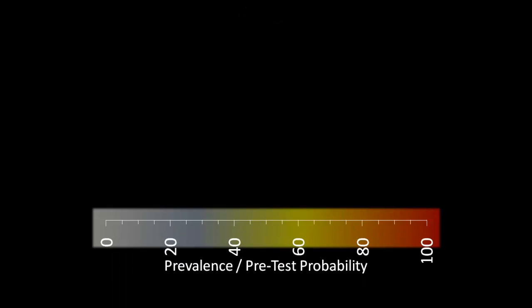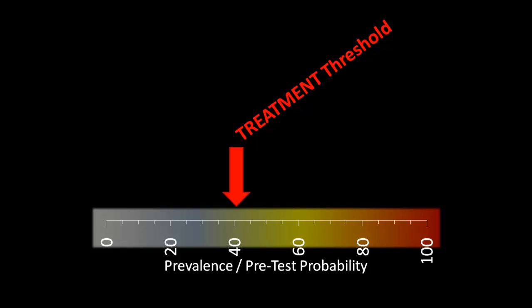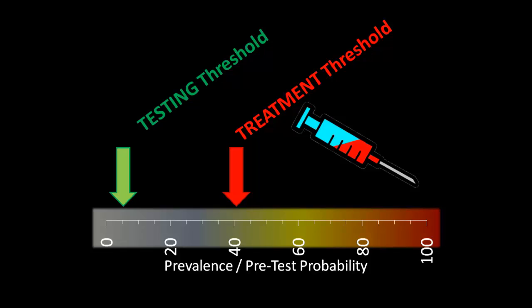As with any disorder, we can identify thresholds based on the probability of the patient having the disease that we would treat or test further. In this situation, let's talk specifically about pulmonary embolism. That's a very dangerous diagnosis, so we would have a very low threshold to go ahead and treat. Likewise, because this is a serious diagnosis, our testing threshold would be relatively low.